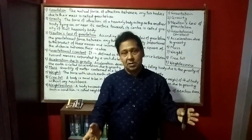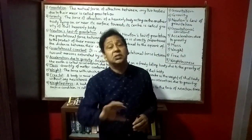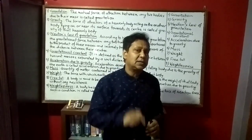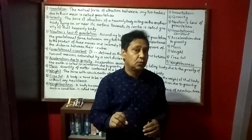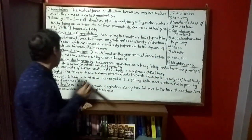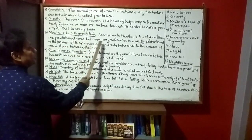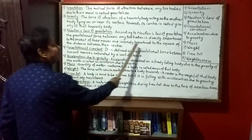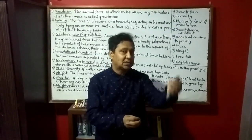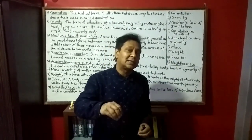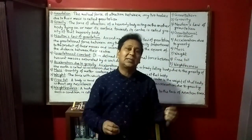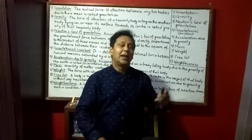After understanding directly proportional and inversely proportional, now I want to explain the law of gravitation. According to Newton's law of gravitation, the gravitational force between any two bodies is directly proportional to the product of their masses and inversely proportional to the square of the distance between their centers. This means if mass is more, gravitational force will be more; if distance is more, gravitational force will be less.